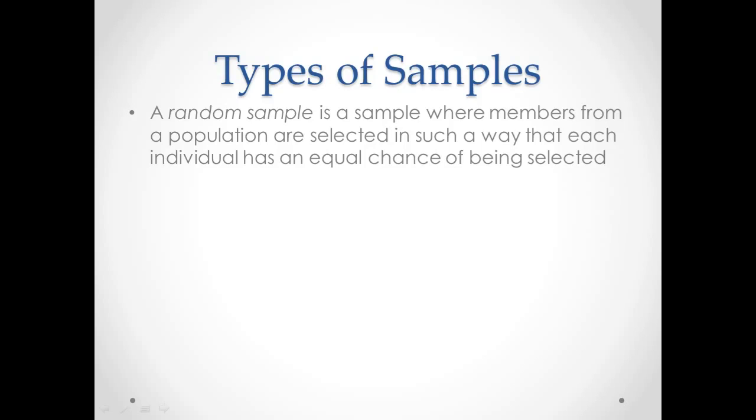So if I have a group of 30 and I have to choose one person, every single person in that group has a one out of 30 chance of being selected. There's no bias towards anyone because of any type of advantage.